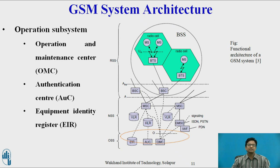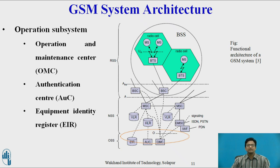Next is the Operation Subsystem (OSS). OSS functions for network operation and maintenance. It includes SS7 (Signaling System Number 7), which is used to send signals to the MSC whenever there is any fault in the GSM system. OSS consists of three components: OMC (Operation and Maintenance Center), AUC (Authentication Center), and EIR (Equipment Identity Register).